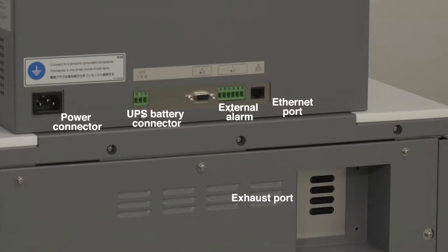In the back of the unit you will find the power cord which is not hardwired and can be removed, the connection port for a UPS backup battery, connections for attaching an external alarm, an Ethernet port, and the external exhaust port for the air system.